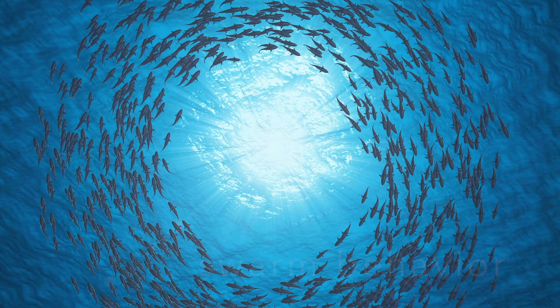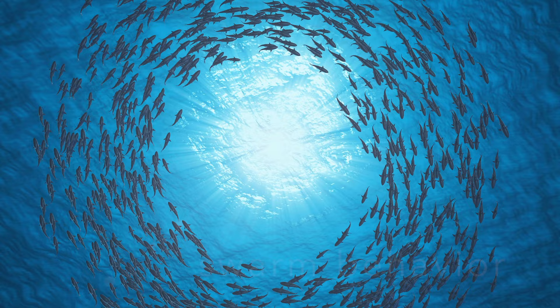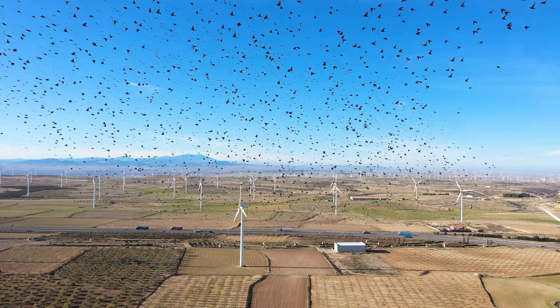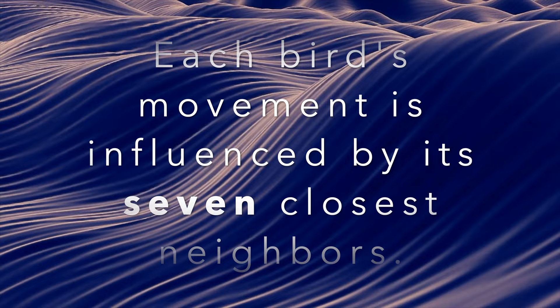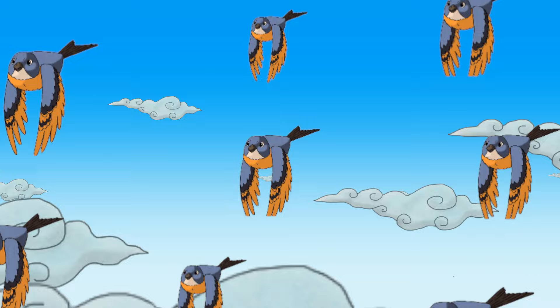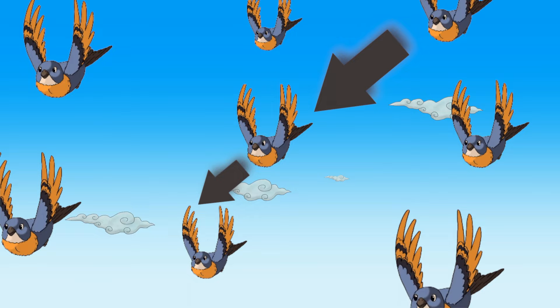There are recent scientific papers explaining the murmuration phenomenon. This impressive, complex behavior is governed by one simple rule: each bird's movement is influenced by its seven closest neighbors. Take a single flying starling — she watches her seven closest neighbors and, based on their actions, changes her own flight pattern. If the bird above her starts to nosedive, then she nosedives as well. And her neighbors are watching her, so they act in turn too. And everyone merely reacting to each other creates this.